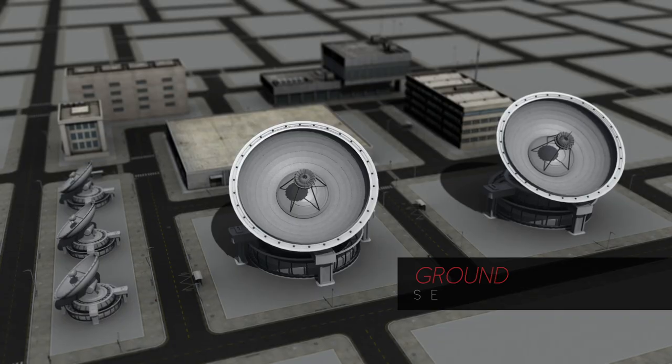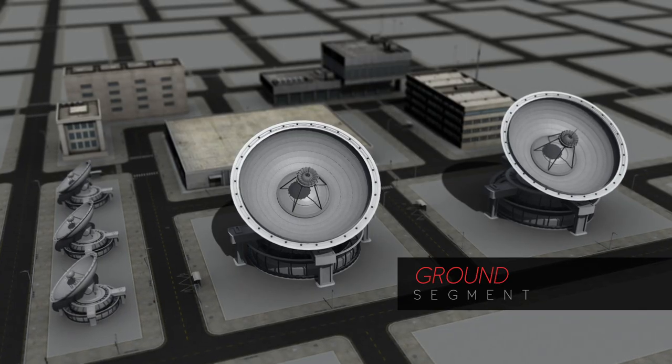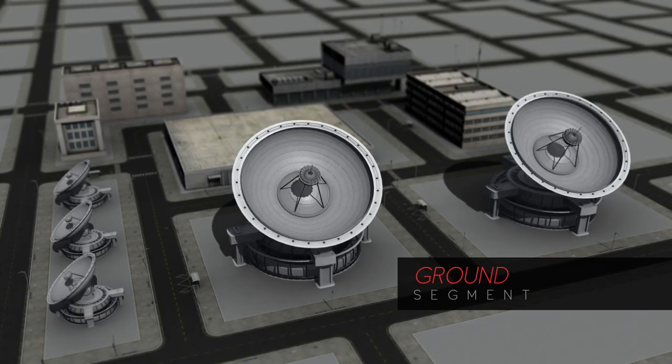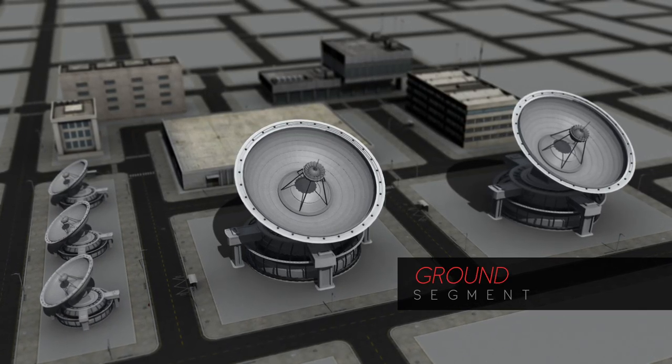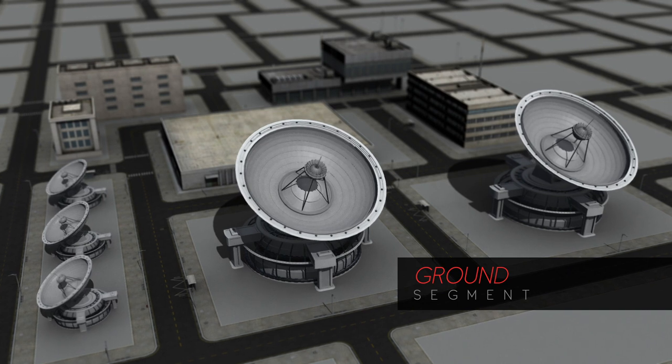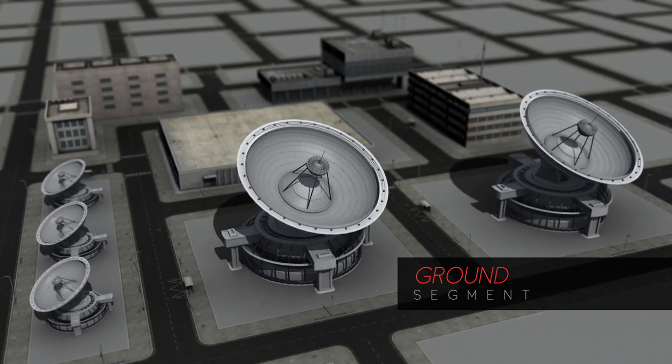The next segment to discuss is the ground segment. Within the ground segment, commands are sent up to the spacecraft, with telemetry and payload data being received on the ground.